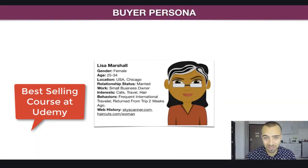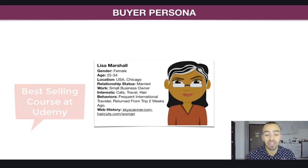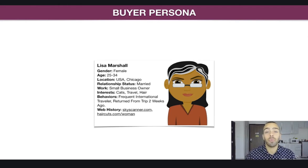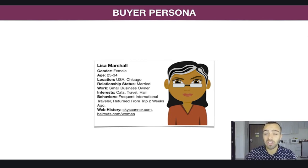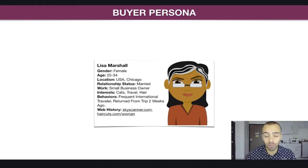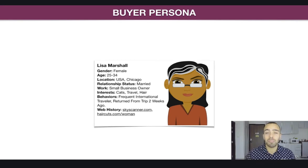This is what a buyer persona looks like. This is Lisa Marshall. You can see gender, age, location, relationship status — a lot of information that we have collected through our social media platforms, through our website and maybe through our ads. Why we would like to have a buyer persona is to be more targeted towards our customer. Lisa Marshall is not real — she is made up based on statistics and also based on assumptions. In the beginning when you don't have enough data on your potential customer, you need to make one up and make some assumptions.